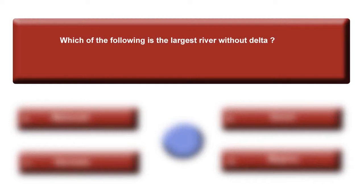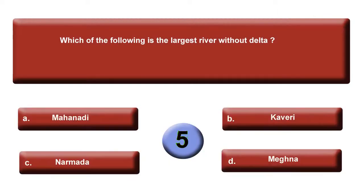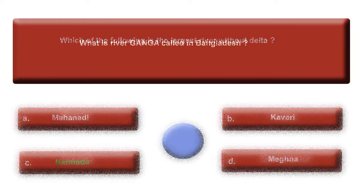Which of the following is the largest river without delta? It's a very easy question. Your options are: option A, Mahanadi; option B, Kaveri; option C, Narmada; or option D, Meghna. Time is up. Your answer is C, Narmada.